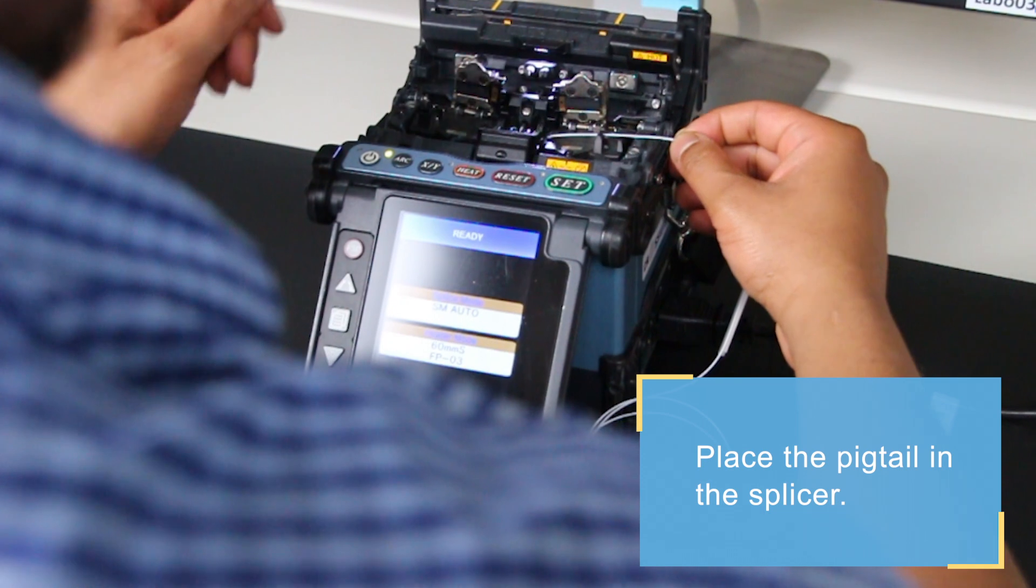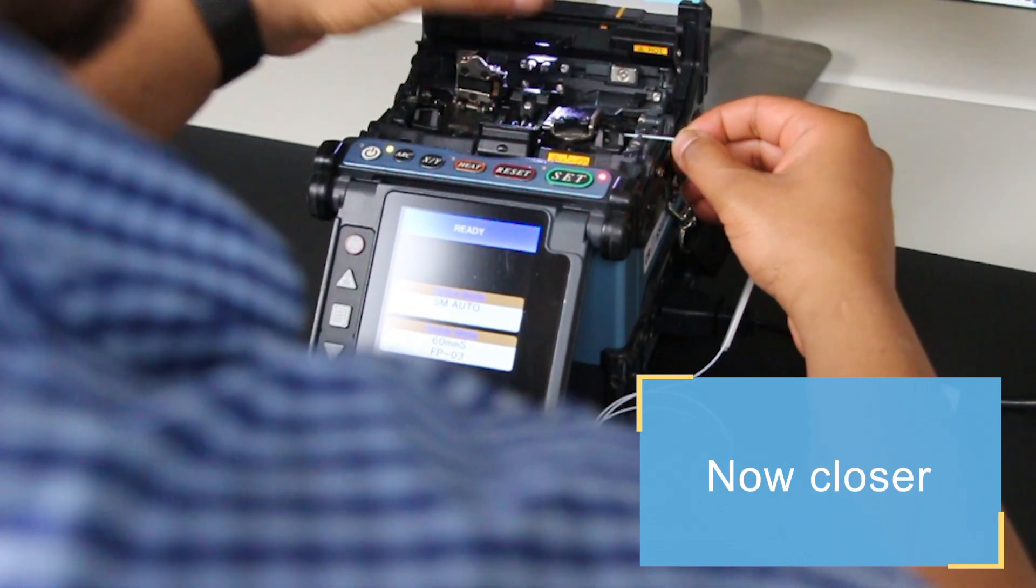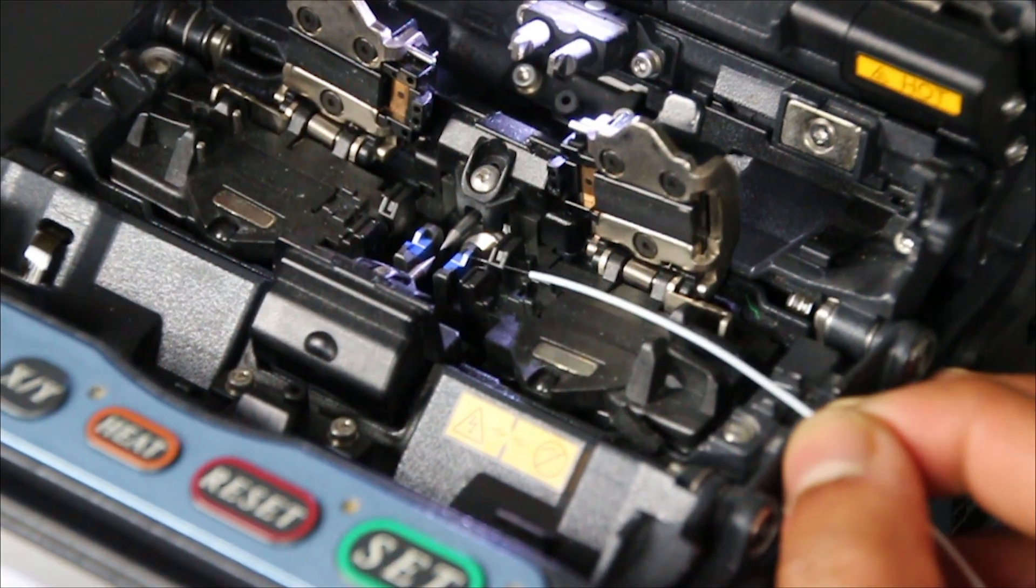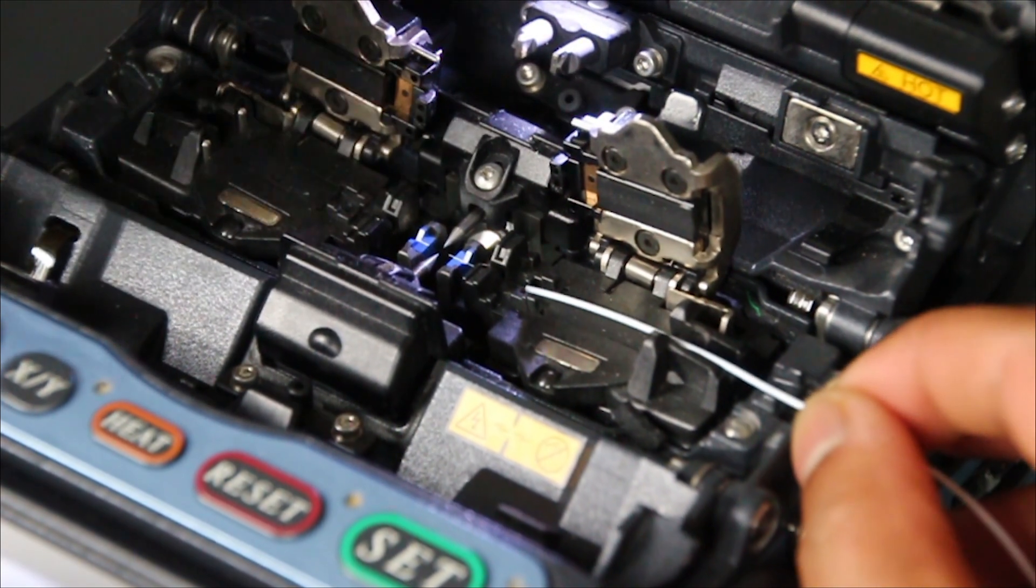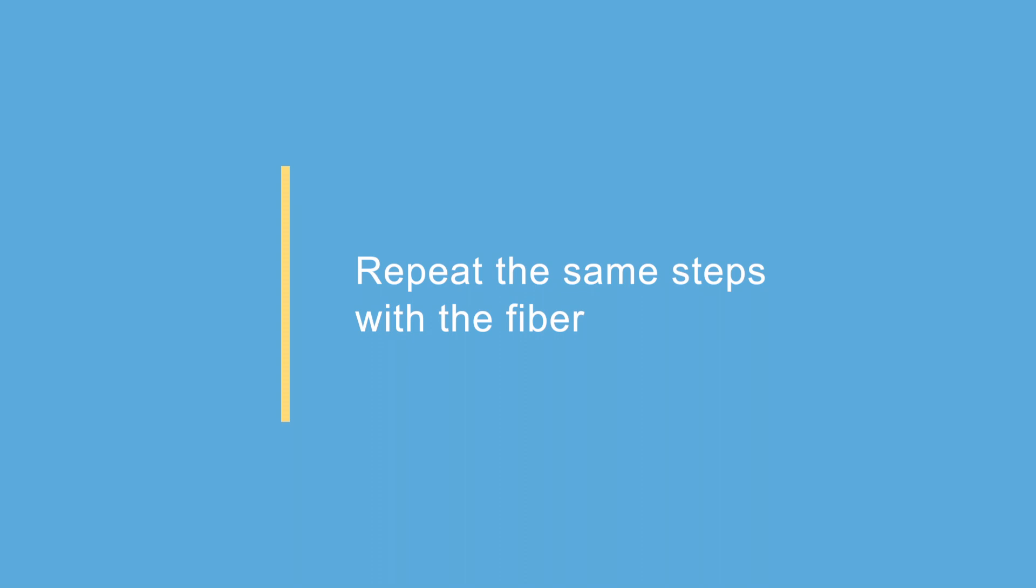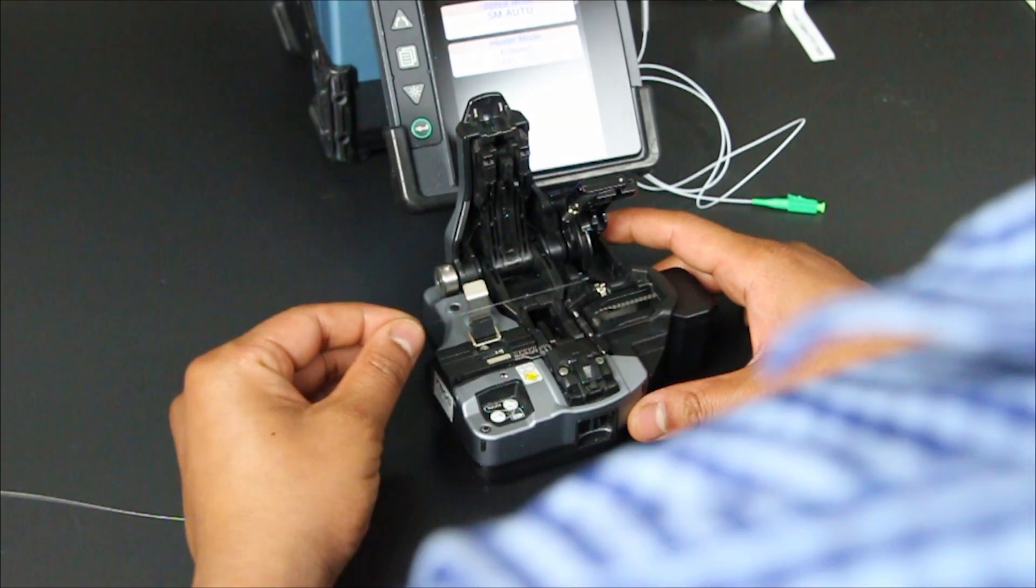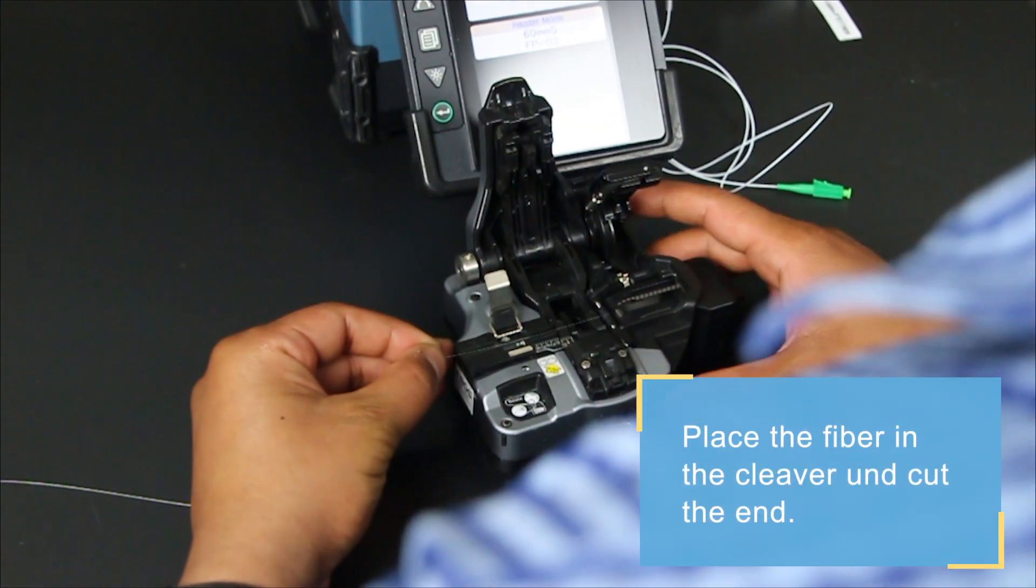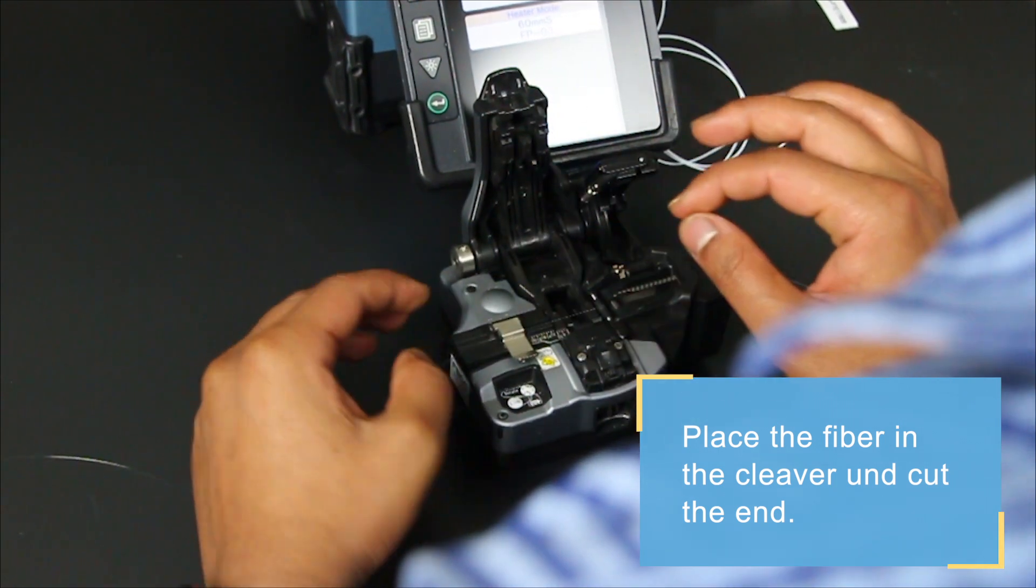Place the pigtail into the splicer. Let's have a closer look. Now, repeat the same steps with the fiber. Cleave the fiber and place it into the splicer.